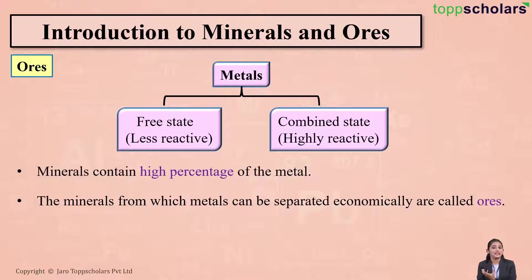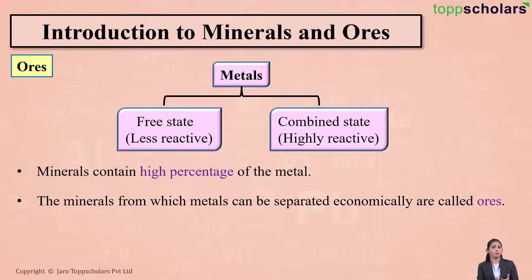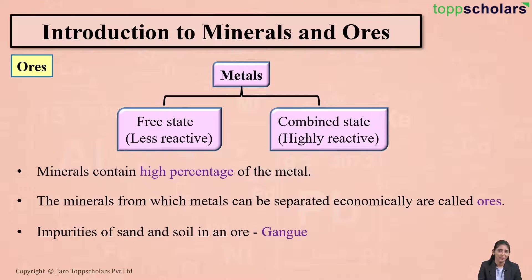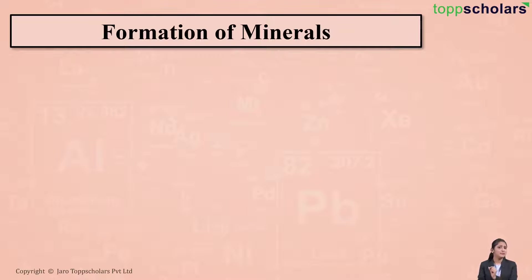Remember: ores are the ones which contain a high percentage of the metal, so you can easily separate the metal from them. Ores are generally compounds of metals accompanied with certain impurities — these impurities may be of sand or soil, and these impurities are called gangue.